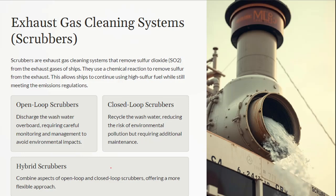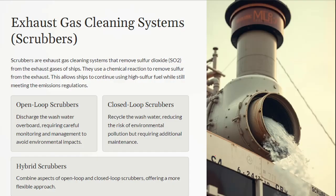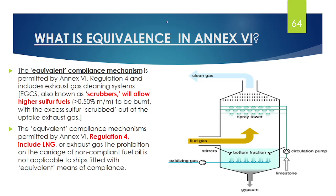In order to comply with reducing sulfur percentages, technological development is also in progress. One such system is the scrubber system — basically a tower that cleans the sulfur present in the exhaust gas. There are different types of scrubber towers: open loop, closed loop, and hybrid scrubbers. Each has advantages and disadvantages. This is one of the technologies by which sulfur emissions in the exhaust are cleaned so that we get cleaner emissions.